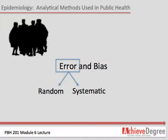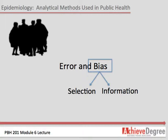Random error may be reduced by increasing the size of the sample you include in your study or improving your measurement instruments. Systematic error, on the other hand, is not due to unforeseen forces, but to error in the design or conduct of the study. It alters the association between exposure and disease in a specific direction, which leads to biased results. Systematic error is more of a problem than random error. Epidemiologists have to evaluate the potential for bias and how it may impact their study. There are two types of bias which we will cover: selection bias and information bias.